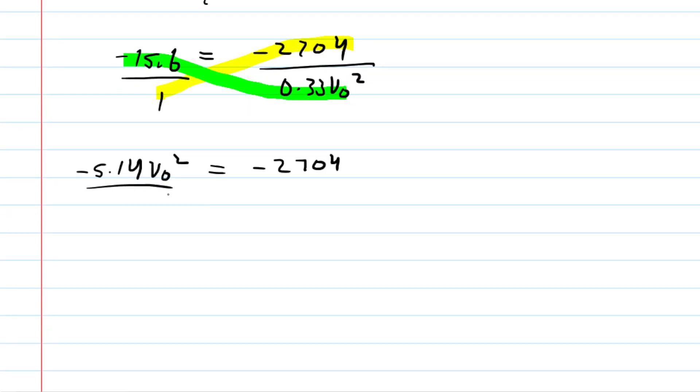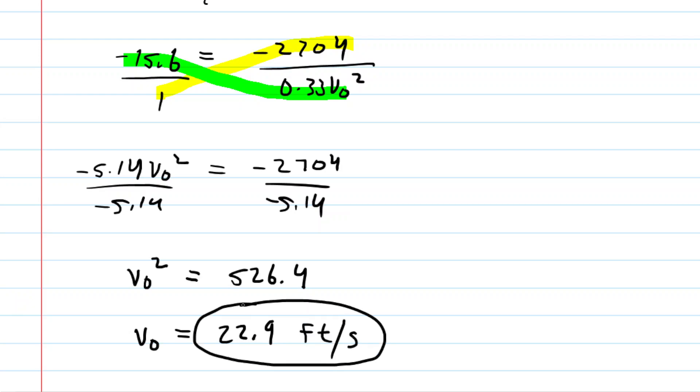Next, we'll divide both sides by the negative 5.14. This gives us v-naught squared is about 526.4. And then finally, take the square root of both sides and you will find that v-naught is approximately 22.9. And because we were using feet in this question, this will be in feet per second. So this is the correct answer to the question.